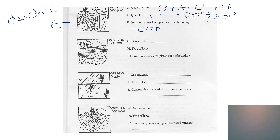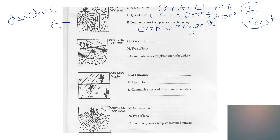Now if those rocks were brittle and subjected to these same forces, what kind of fault would we get? It would be a reverse fault. But the rocks have to be brittle — here they're ductile.